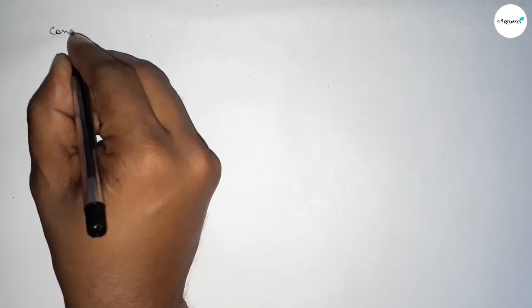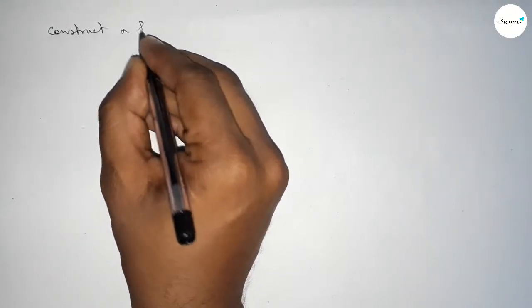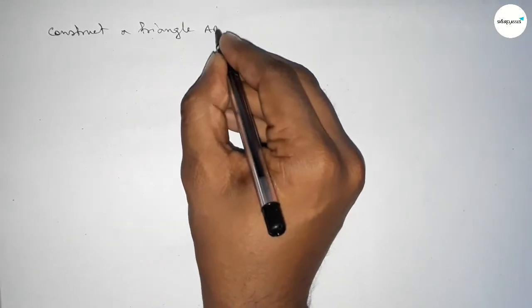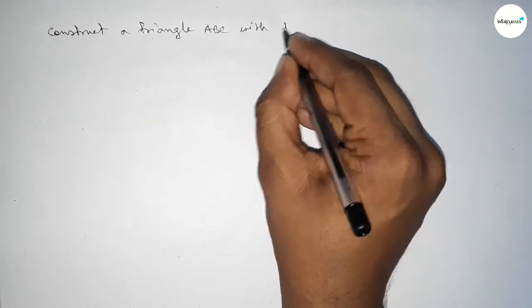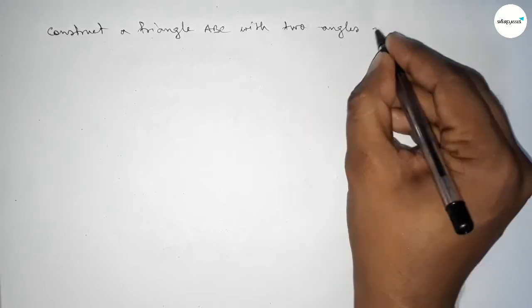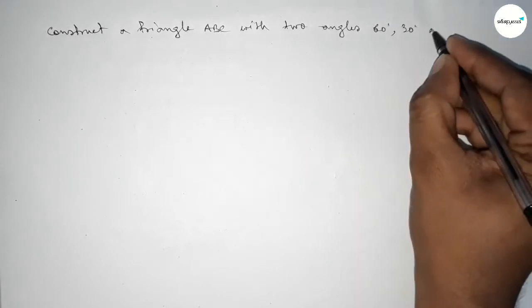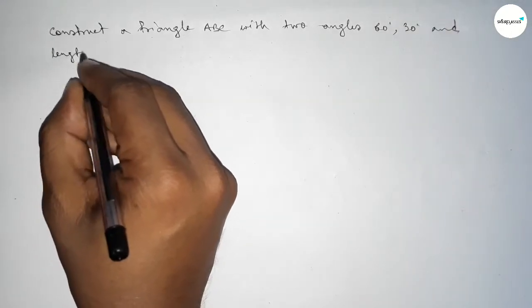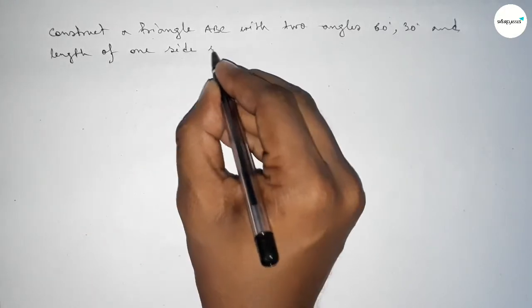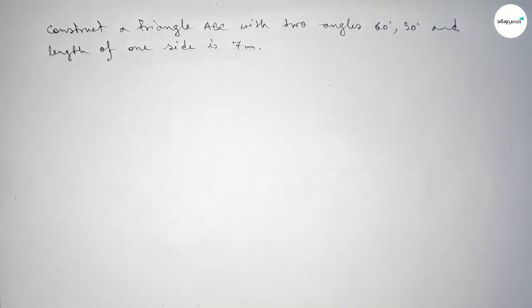Hi everyone, welcome to Syshare Classes. Today in this video we have to construct a triangle ABC with given two angles, 60 degrees and 30 degrees, and given length of one side of the triangle is 7 centimeters.